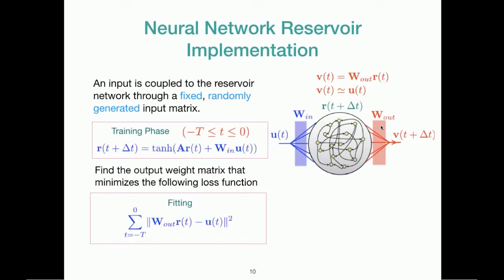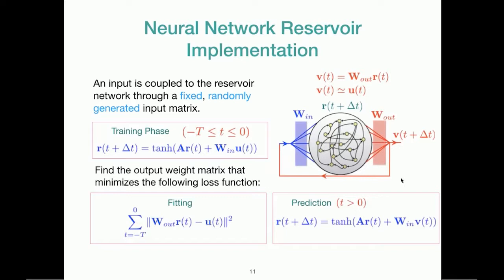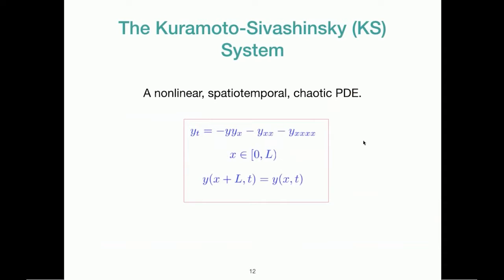So the output matrix is a map from the reservoir state onto the output. And in the prediction phase we are going to close the feedback loop so that the reservoir evolves according to this equation. What the reservoir is doing here is it's predicting the one step output, feeding it back to the input, and then predicting the next step and so on. So at this point the reservoir is an autonomous dynamical system which is capable of emulating the system that it was trained on.